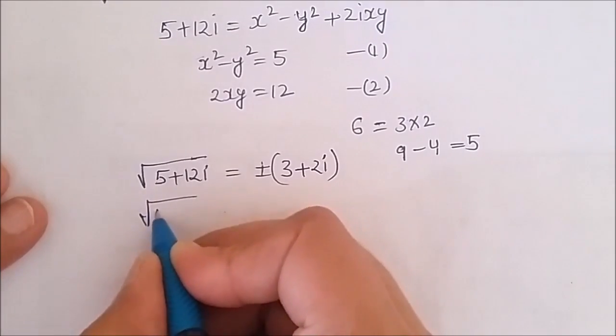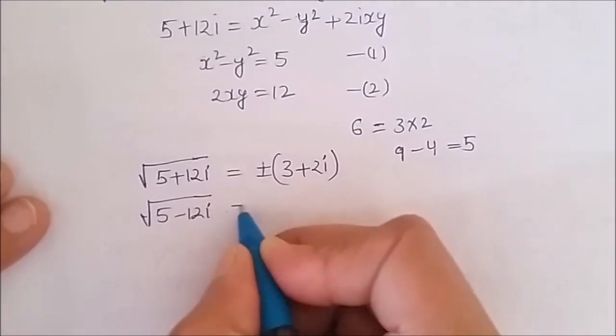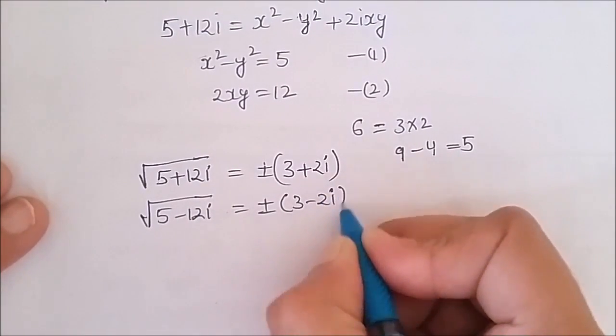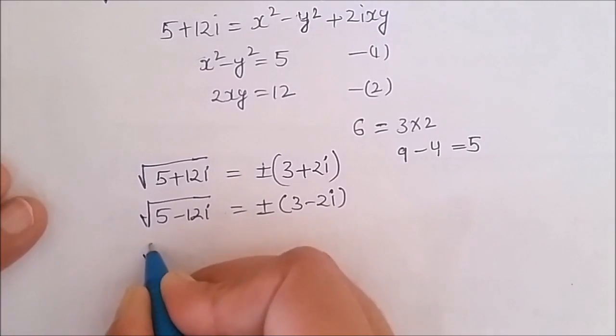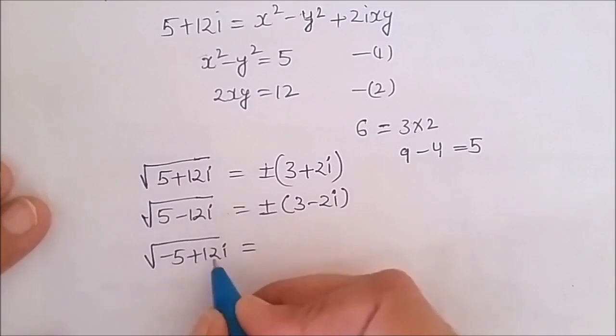If I have a complex number 5 minus 12 iota, the square root is plus minus (3 minus 2 iota). Now if my complex number is minus 5 plus 12 iota, then the square root of minus 5 plus 12 iota will be...